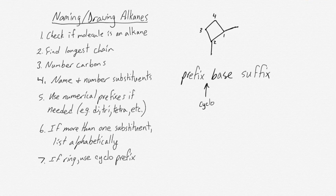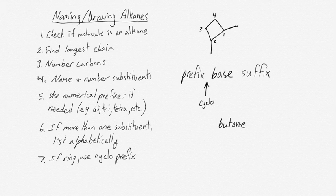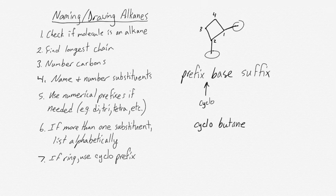With four carbons, the base is 'bute.' It's still all single bonds, so it's still '-ane,' making it 'butane.' But there is a ring structure, so it becomes 'cyclobutane.' We have two prefixes — both are methyls appearing on the first and second carbons. It doesn't matter which number we give which methyl because the molecule is symmetrical. So the final name is 1,2-dimethylcyclobutane.